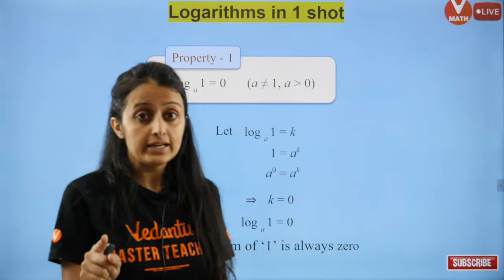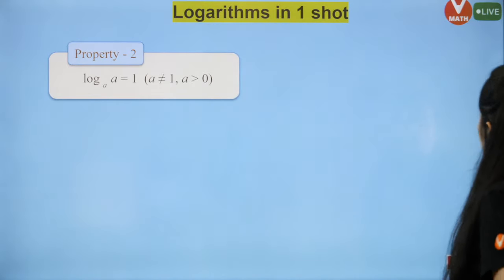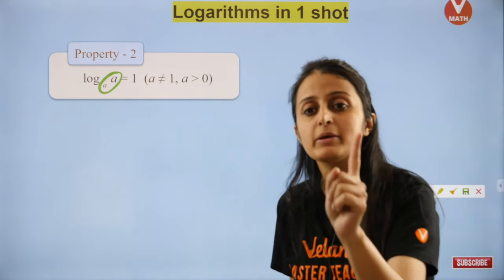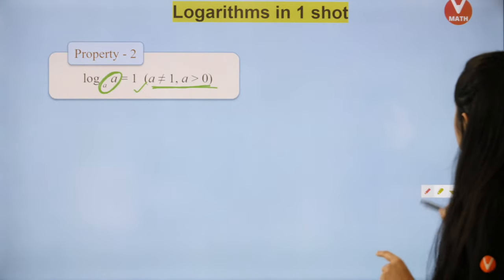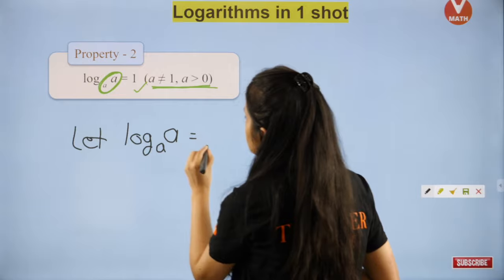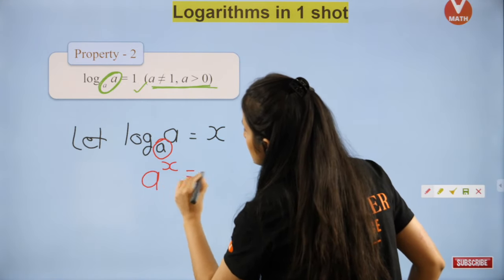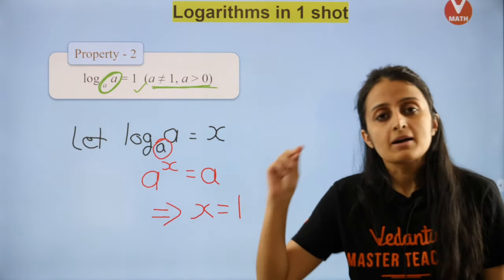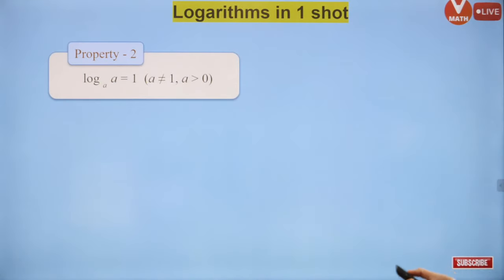Property 1: Log of 1 to any base is zero. Let's prove this. Let log_a(1) equal some x. Converting: a raised to power x is 1. This is only possible when x is 0. That's the only possibility and that's the only proof.